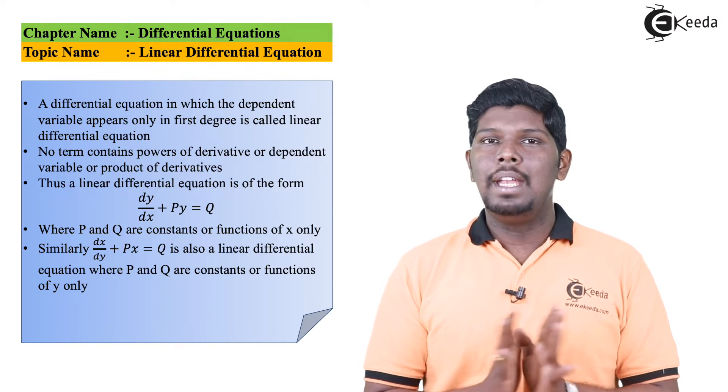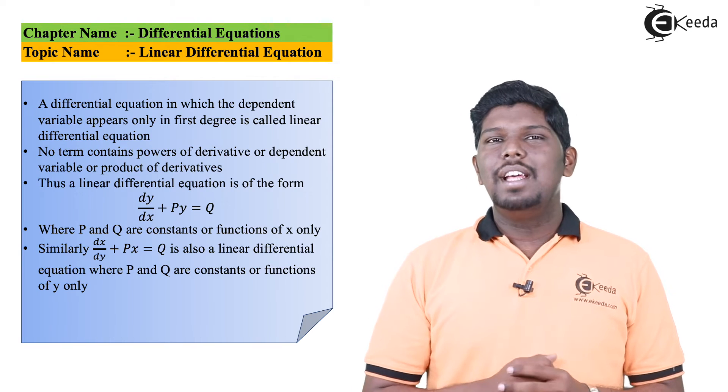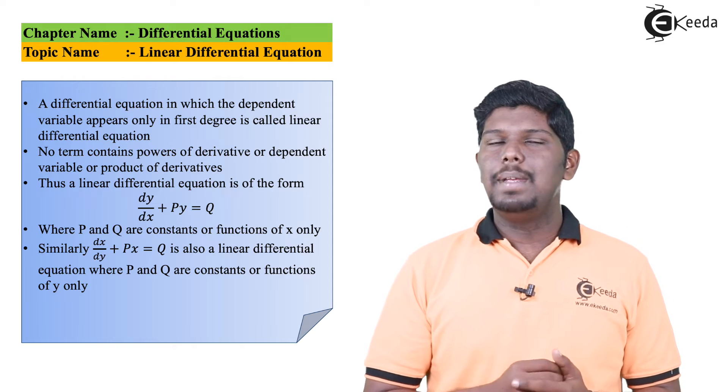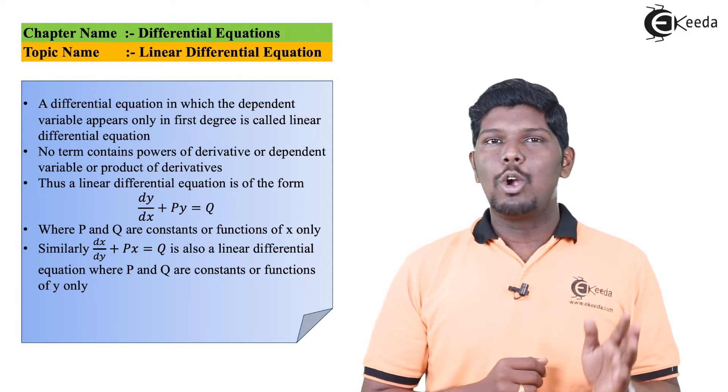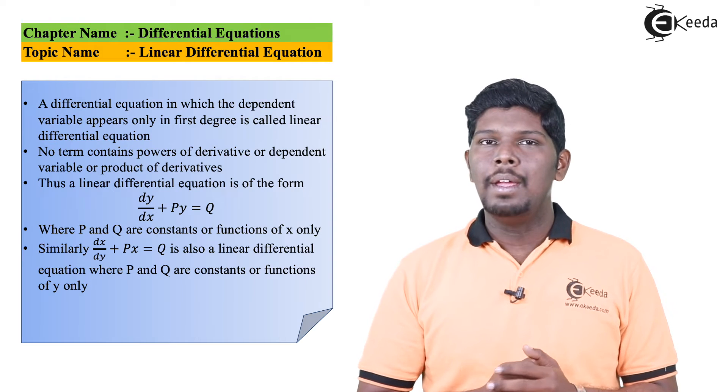Similarly in the second form we have dx/dy + Px = Q. Here specifically P and Q will be constants or either functions of y but never the functions of x.